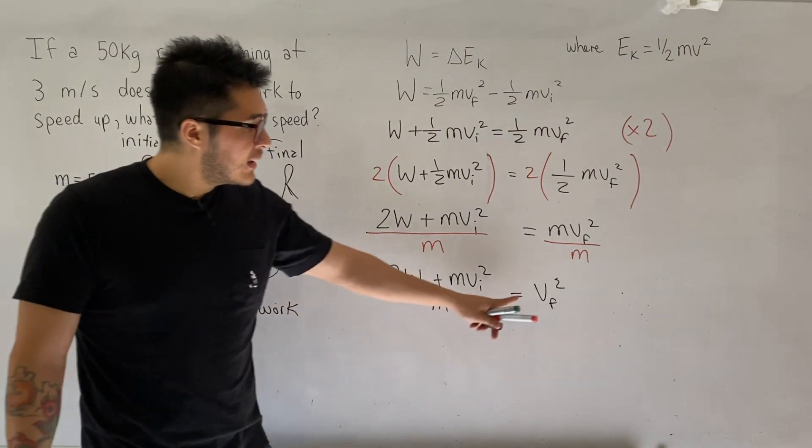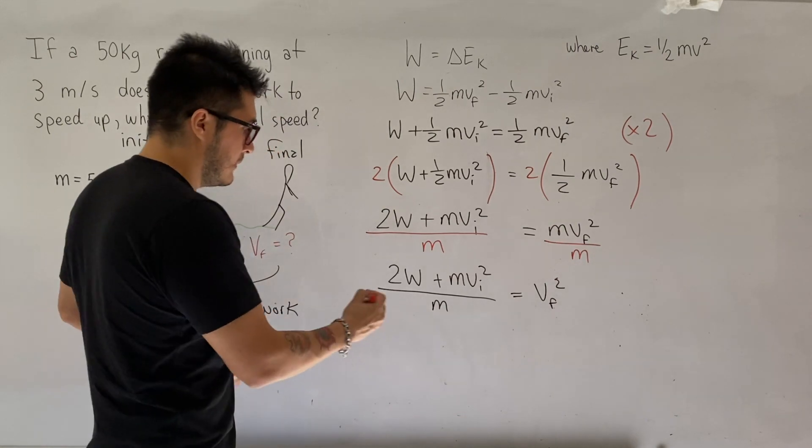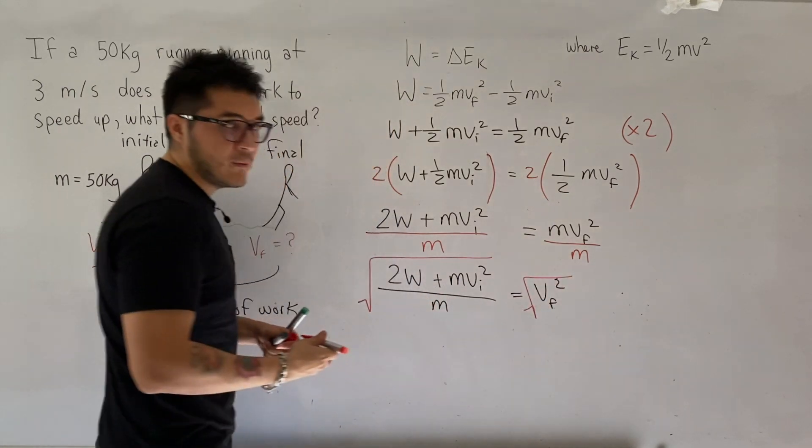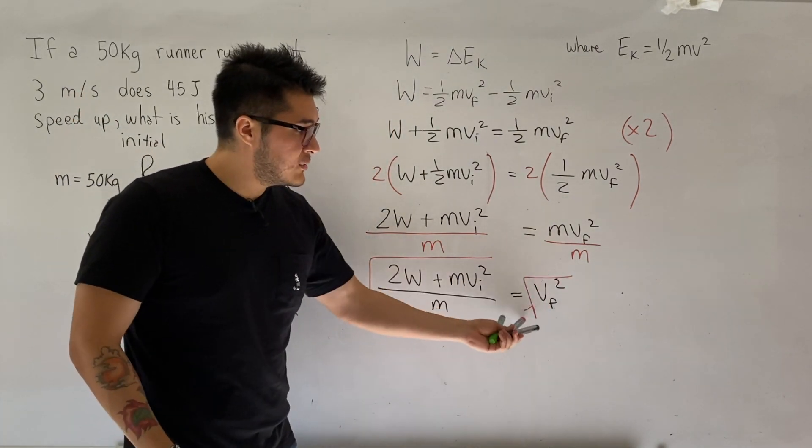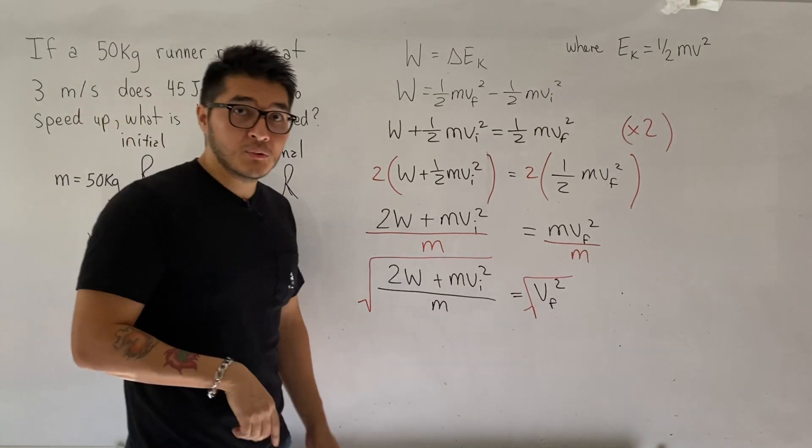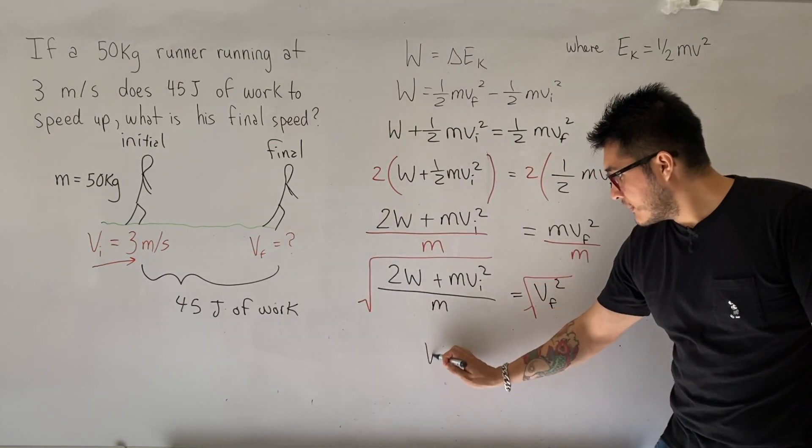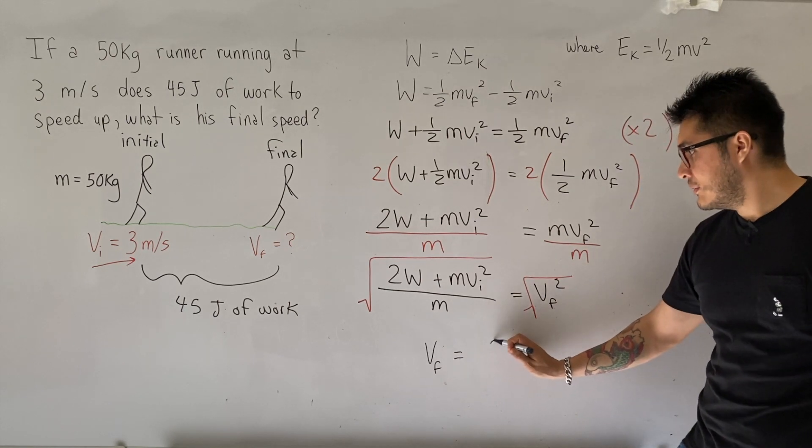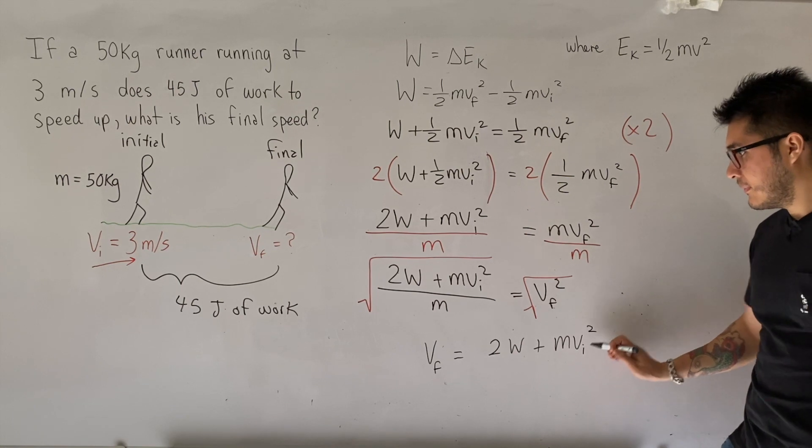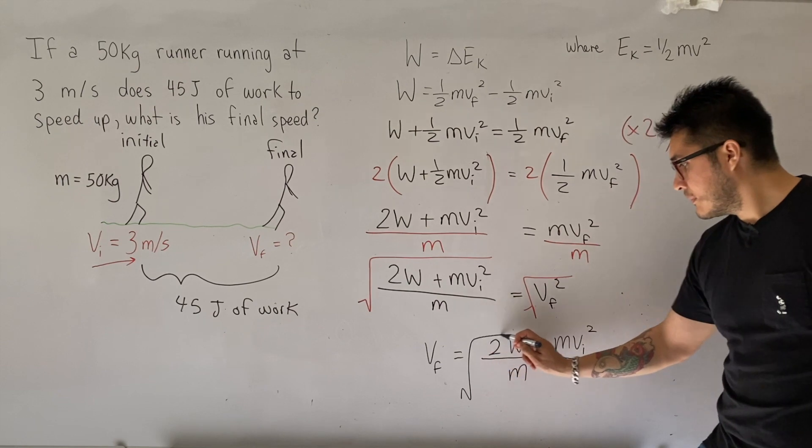And as a last step, we want to get rid of the square from the v final, so we're going to square root on both sides. Right, because that's the inverse operation of squaring, we'll be taking the square root. So think of the Pythagoras theorem, right? The c squared, to get rid of the c squared, you take the square root. All right, so now let's simplify our equation. So v final equals to 2w plus mv initial squared divided by m. This is all going to be square rooted.